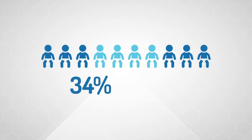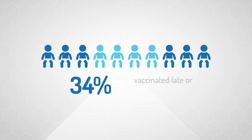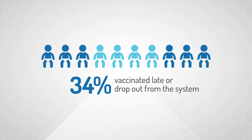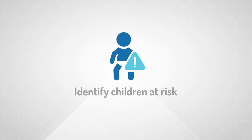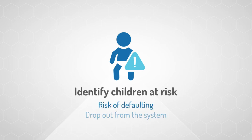34% of children in Pakistan are not completely vaccinated, are vaccinated late, or drop out from the system. This is due to a lack of real-time information for vaccinators to identify children at risk of defaulting or dropping out from the immunization schedule.